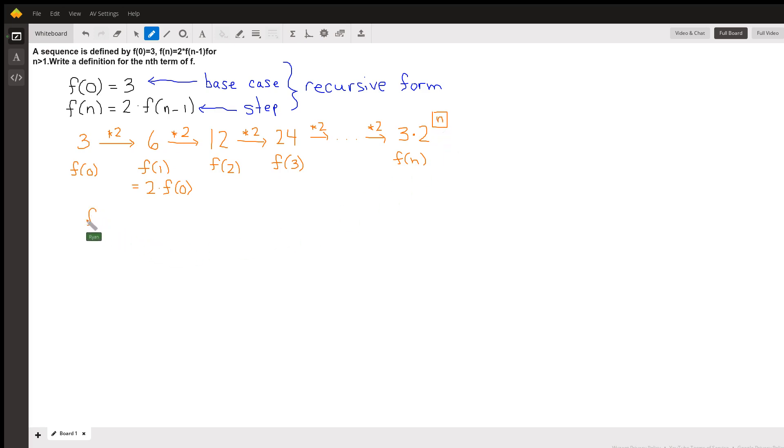So the explicit form for f(n) is 3 times 2 to the nth power. This is our explicit definition for f(n). So let's just check it on a few cases.